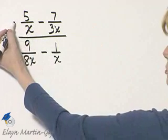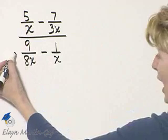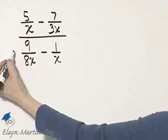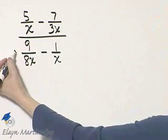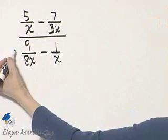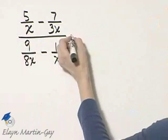So I'll multiply the numerator by 24x and the denominator of the complex fraction by 24x. And I'm allowed to do that because 24x over 24x simplifies to 1.